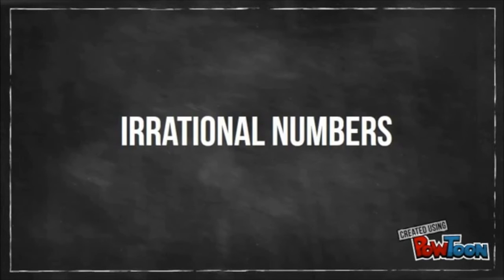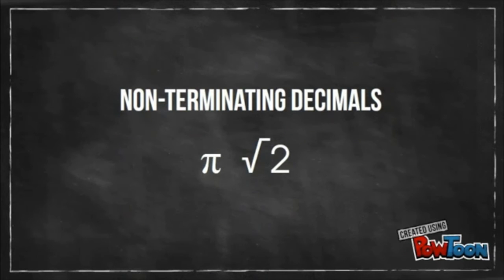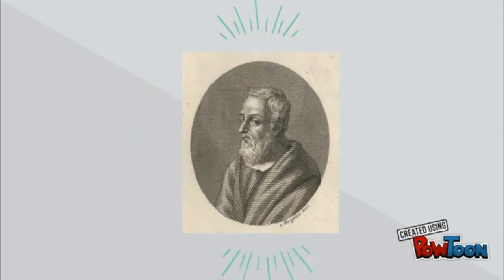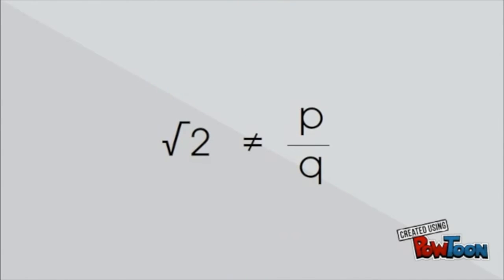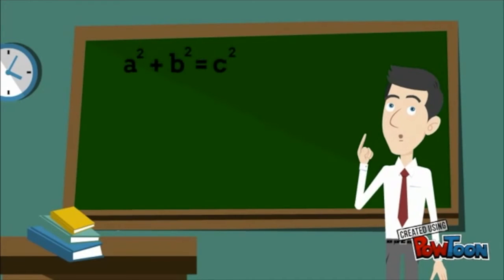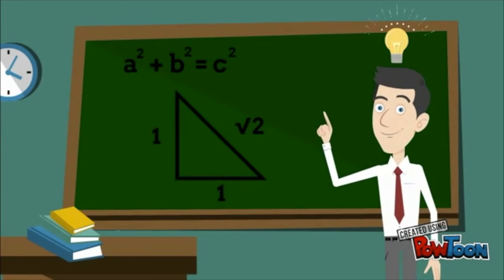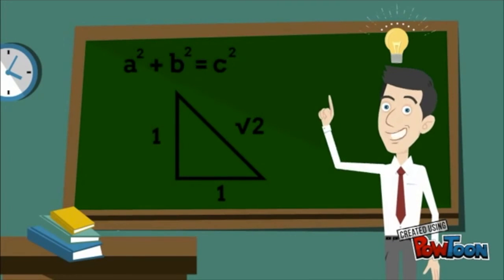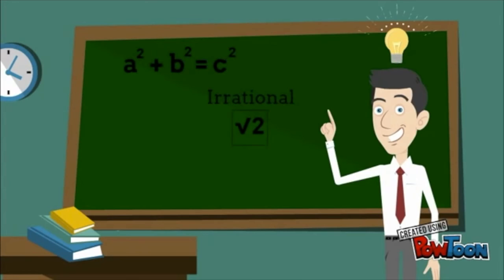Irrational numbers are numbers that cannot be written as a fraction, such as Pi. Greek philosopher Hippassus discovered that not all numbers can be represented by a ratio. Using the Pythagorean theorem, he discovered that in some cases, the length of the hypotenuse could not be written as a fraction, which led to the creation of irrational numbers.